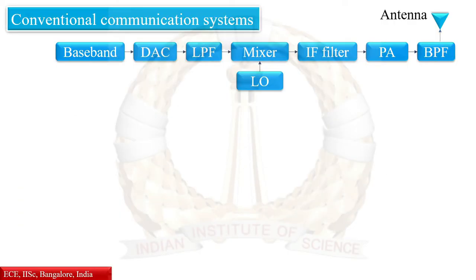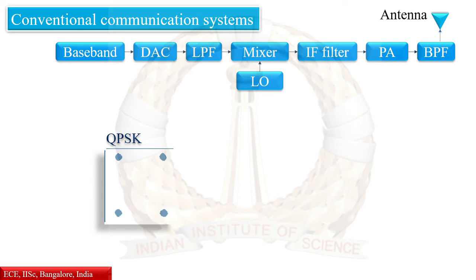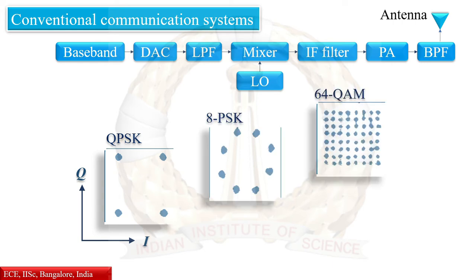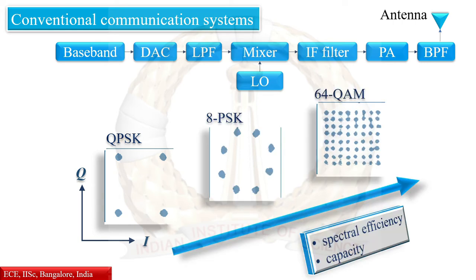In modern digital communication, data is modulated by spreading the carrier, and the transmitted signals are represented by constellation points in in-phase and quadrature-phase components, that is, I and Q components. By increasing the number of these constellation points, a higher spectral efficiency and capacity is achieved.